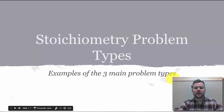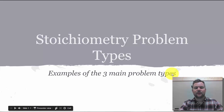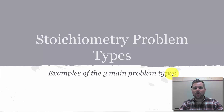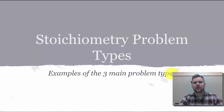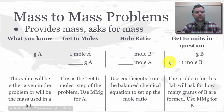Welcome back to another one of the chemistry videos for the topics that we talk about here in our chemistry classes. This one's looking at the specific types of stoichiometry problems. We have three different types that we use in our class. We're going to look at a couple for each type. To start, we're going to begin with mass-to-mass problems, and that's where we start with a mass and we finish with a mass.